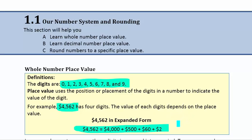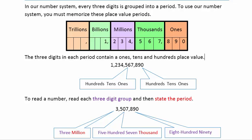When you write a number out in this fashion — 4,000 plus 500 plus 60 plus 2 — that's called expanded form. So in our number system, every three digits is grouped into a period. That's why when we write a number, after every three digits we put a comma, because each of those commas separates the periods.